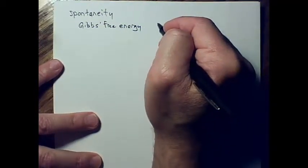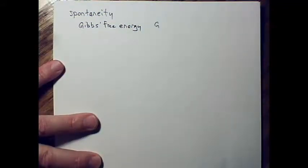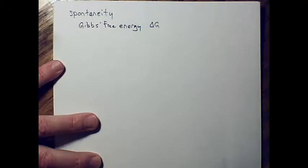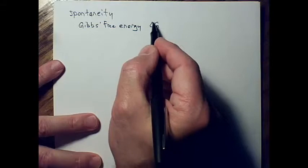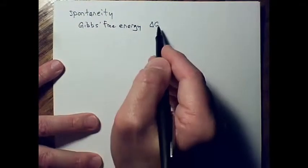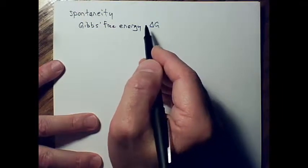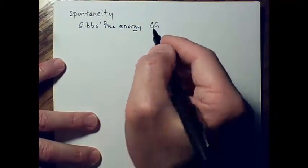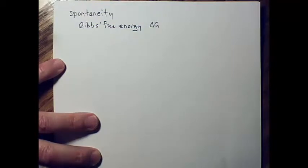Gibbs free energy is symbolized by G. The change in Gibbs free energy uses the symbol delta, so we write delta G. If this term is positive, the reaction is not spontaneous; if it is calculated to be negative, the reaction is considered to be spontaneous.